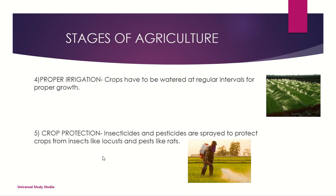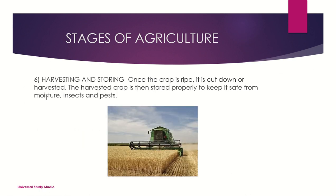Number five: crop protection. Insecticides and pesticides are spread to protect crops from insects like locusts and pests like rats. You can see the spray here being used to take out all these locusts and rats.